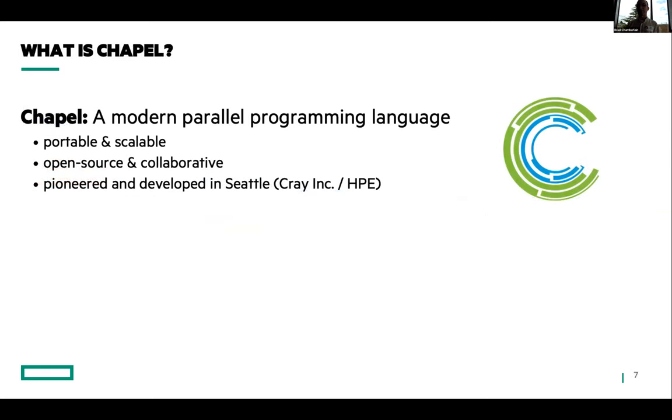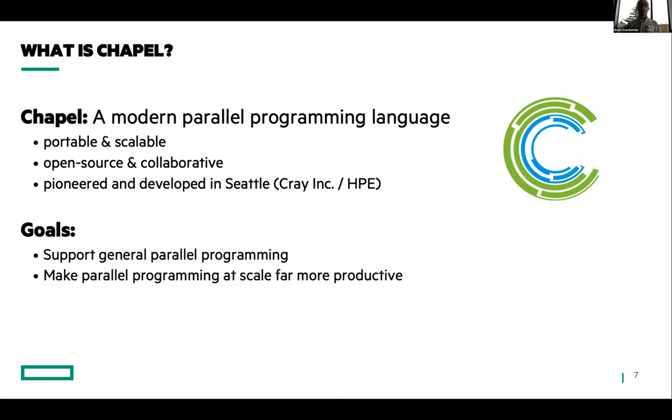So Chapel, which I'm here representing today, is a language that was developed by my group to try to amend this situation. It's a modern parallel programming language, by which I mean sort of post C, C++, Fortran era. It's portable and scalable, so you can run Chapel on a laptop like this Mac or the largest supercomputers you can get access to. It's open source and collaborative, being developed at GitHub. And keeping the theme of this workshop, it was pioneered and developed here in Seattle at Cray, which was recently acquired by Hewlett Packard Enterprise. So I now work for HPE and the Chapel project continues there. The two main goals of Chapel are to support general parallel programming—which you can think of as if you've got some parallel algorithm and some parallel hardware, you ought to be able to do that in Chapel or we're failing at that goal—and the second one is make parallel programming at scale far more productive than it is today.